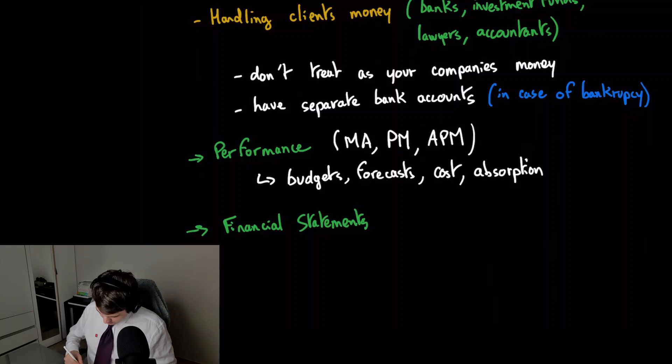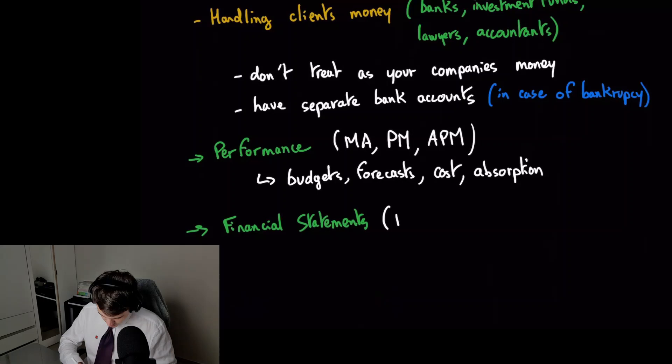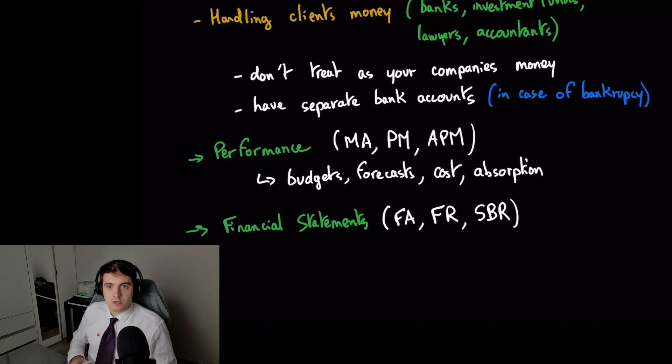Conversely, financial statements, which we saw was more of the financial controller's job, you will see this after BT and MA. It's exam number three and it's called FA, financial accounting. Then you will revisit this topic in exam number seven, which is called FR, financial reporting.